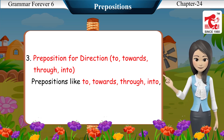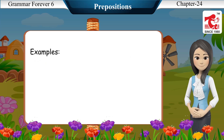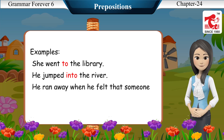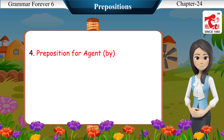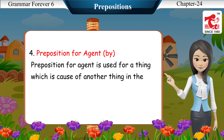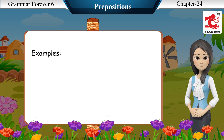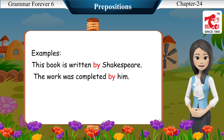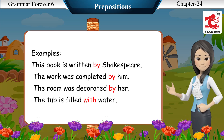Prepositions for direction — to, towards, through, into — are used to describe a direction. Examples: She went to the library. He jumped into the river. He ran away when he felt that someone was coming towards him. Prepositions for agent — by, with — are used for a thing which is the cause of another thing in the sentence. Examples: This book is written by Shakespeare. The work was completed by him. The room was decorated by her. The tub is filled with water.